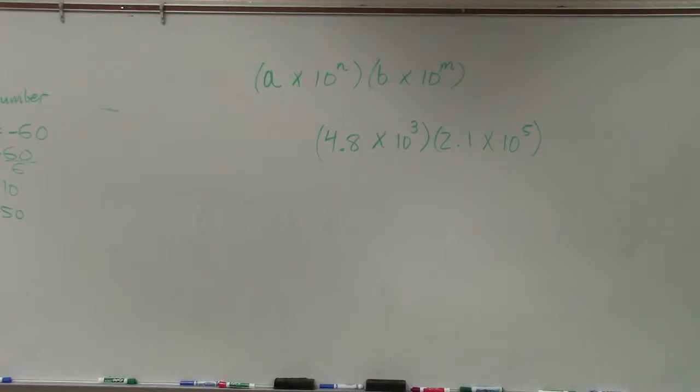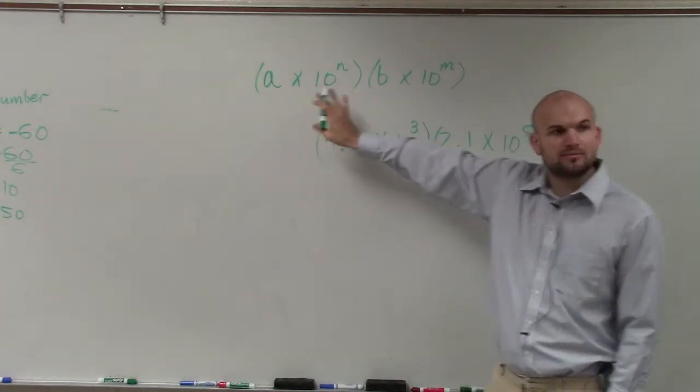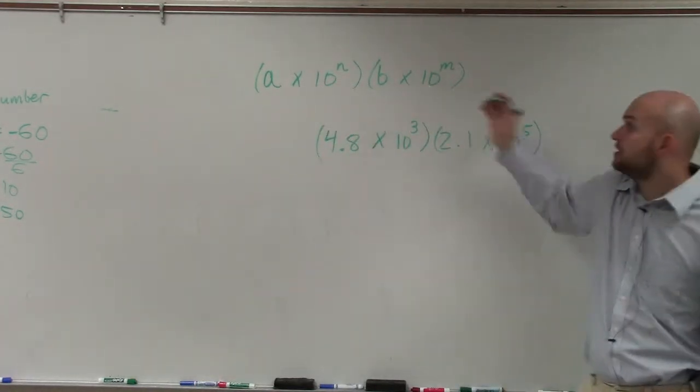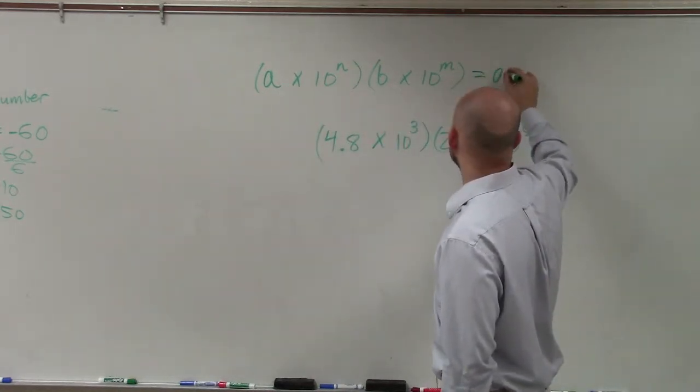So when we're dealing with multiplication and division, basically, ladies and gentlemen, what we're going to do when you have two numbers that are in scientific notation, to multiply them, basically all we're going to do is multiply our a times our b.